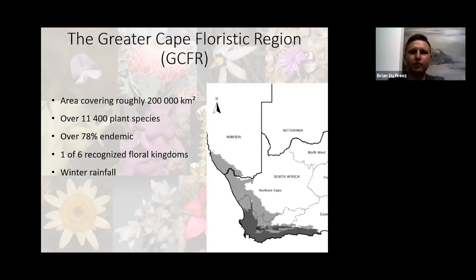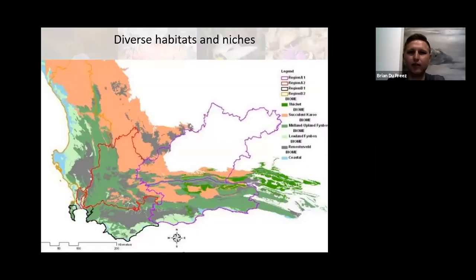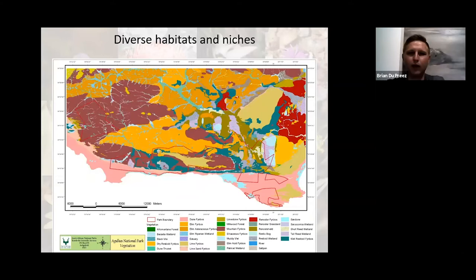So why do we have this spectacular diversity in the Cape Floristic region? The main reason is we've got diverse habitats and niches in which these plants can occur, evolve and adapt. We've got four main vegetation units: fynbos, renosterveld, Strandveld, and forest. But if you look a bit closer, you'll see even within a small area you've got very diverse patterns of fine vegetation units forming a mosaic within the landscape.